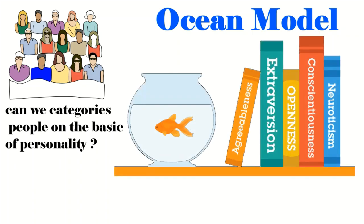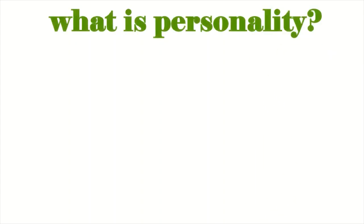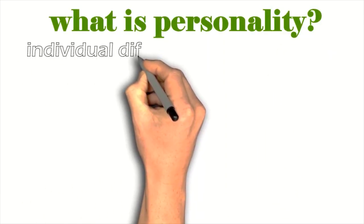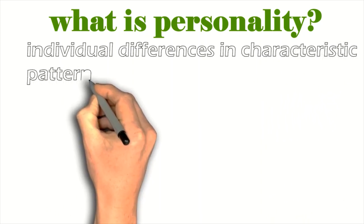And we will tell you about the famous ocean model, in which we can define the help of any individual's personality. So first of all, I will tell you about personality. What is personality? Personality is a simple human behavior, which depends on its interests and characters.